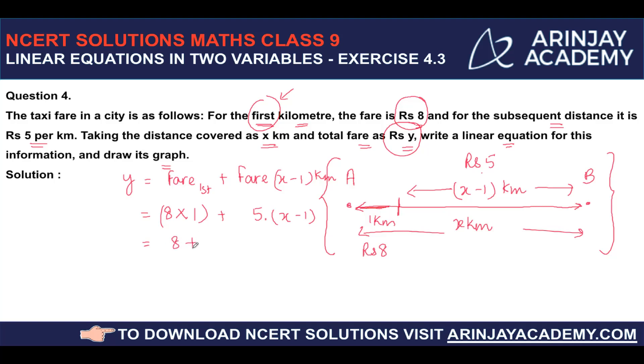Or in other words, 8 plus 5 times x gives you 5x, 5 into minus 1 gives you 5 minus 5. So this will be 5x plus 3. So my linear equation for the fare actually becomes y is equal to 5x plus 3.